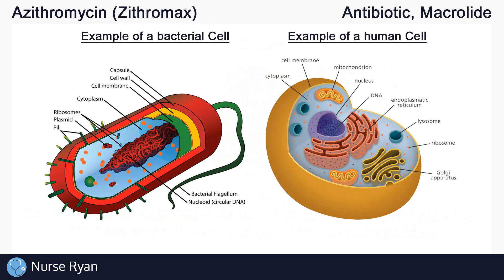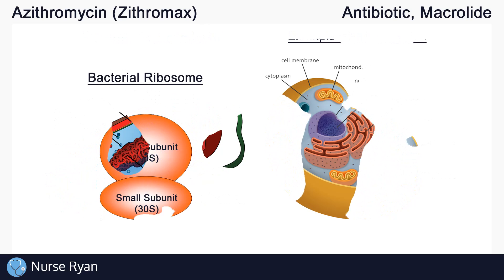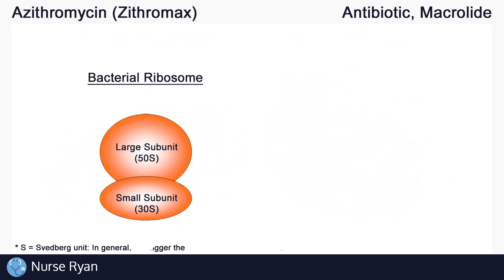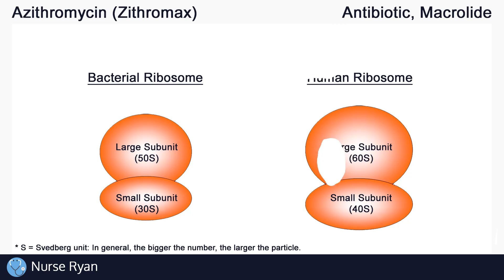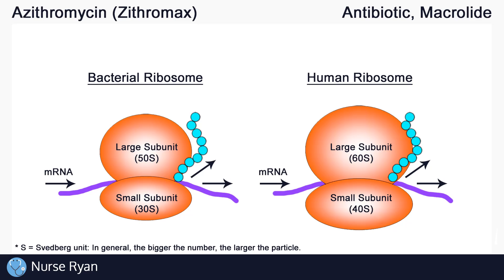Now, bacterial cells and human cells both need these proteins to function, so how can we inhibit just the production in bacterial cells? It just so happens that ribosomes are slightly different in bacterial cells. In bacterial cells, the large subunit of the ribosomes is 50S and the small subunit is 30S. S stands for the Svedberg unit — the bigger the number, the larger the particle. But in human cells, ribosomes are made up of a 60S and a 40S subunit. So essentially they function the same way to make proteins, they're just different sizes.